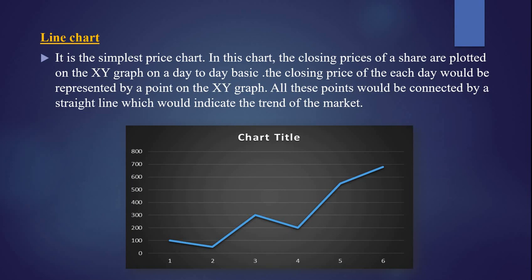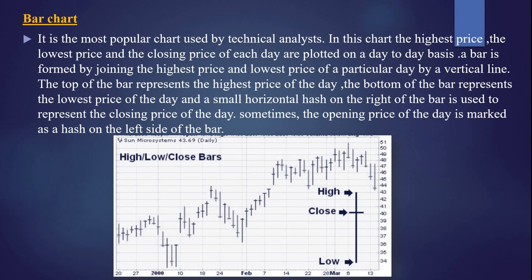We can see the trend of upward and downward movement in the line chart. On the first day rate was 100, then it comes down to 50, then again rises to 300, then again falls, then again rises like that. There is a movement we can see in the line chart and visually we can say that presently there is a growth in the market price of the shares. Like that, we can predict or assume the future with the help of the line chart.